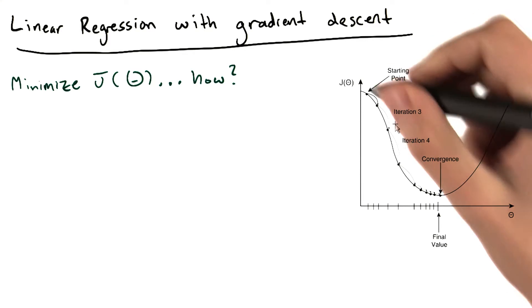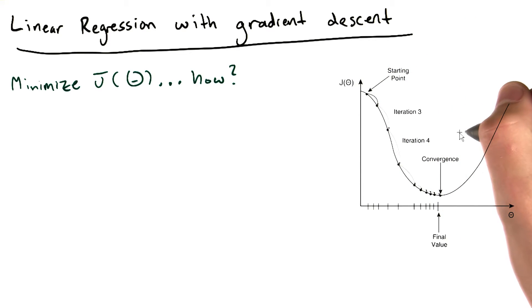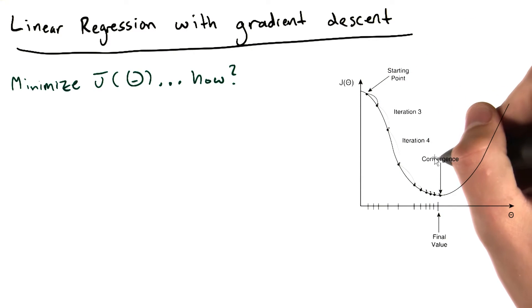This theta value gives us our smallest value of J of theta, and so we know that we've minimized J of theta. This is what gradient descent might look like in one dimension. Let's see what it looks like in two dimensions.